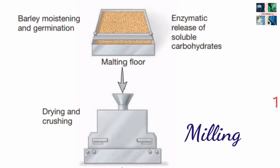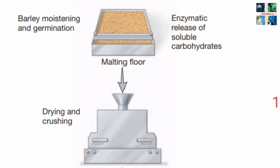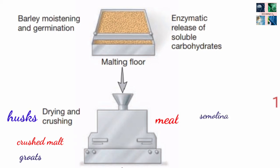The second step is milling. The finished malt is milled, similar to the making of flour, so that it dissolves better in water. Malt mills produce various grades of crushed malt — husk, groats, meal, semolina, and powder, from the coarsest to the finest.